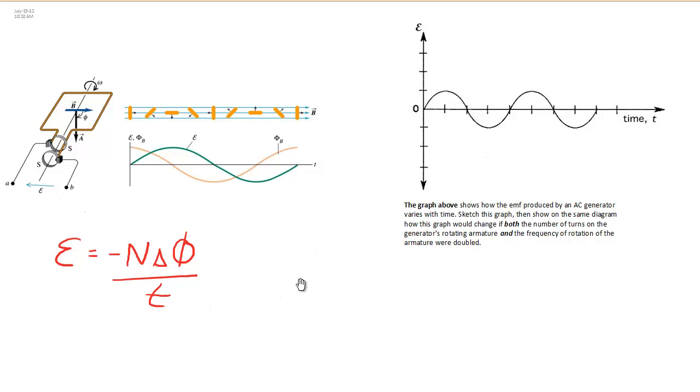What about the frequency of rotation? If you remember back to grade 11, frequency and period are inversely related to each other. So, if the frequency goes up, the period, how long it takes to change, goes down. So, if we double the frequency, we half the time.